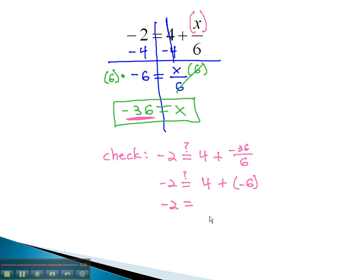Is that equal to negative 2? Well, the negative is bigger, and 6 minus 4 is 2. It checks, which tells us our solution is correct.